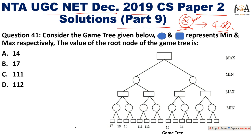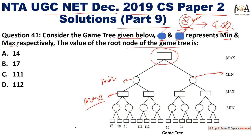Question 41: Consider the game tree given below where circle marks represent minimum and rectangle marks represent maximum. We need to find the value of the root node of the game tree. So circles represent minimum and rectangles represent maximum values.